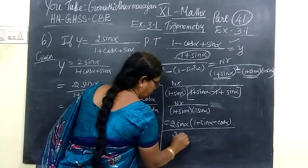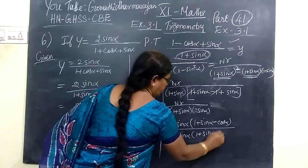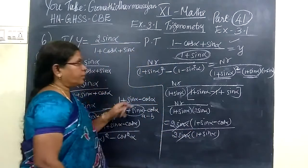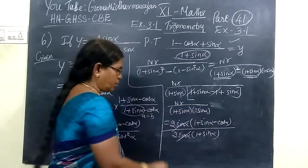Divided by 2 sin alpha times 1 plus sin alpha. This will be getting cancelled. Even 1 plus sin alpha minus cos alpha.